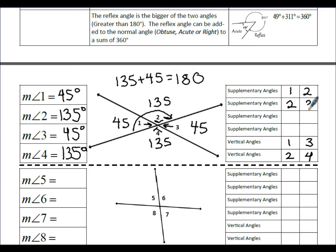Angles 2 and 4 are also congruent and on opposite sides, making them vertical angles. Angles 2 and 3, angles 3 and 4, and angles 4 and 1 each make a straight line, so each of these pairs are supplementary angles.